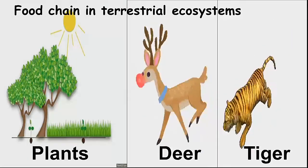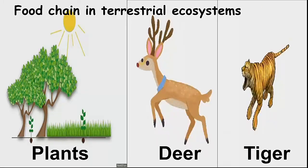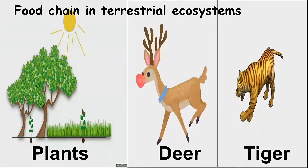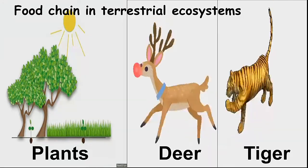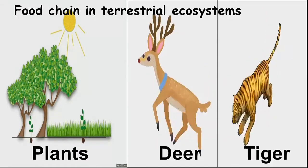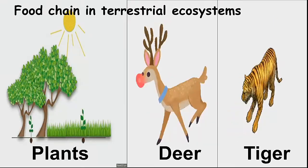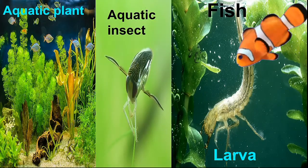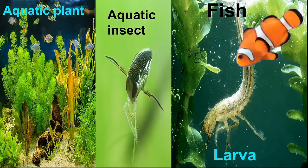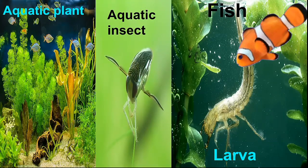Plants get energy from the sun, deer gets energy from plants and tiger gets energy from deer — this is an example of a food chain in a terrestrial ecosystem. In an aquatic ecosystem, aquatic insects get energy from aquatic plants, larvae get energy from aquatic insects, and fish get energy from larvae — this is an example of a food chain in an aquatic ecosystem.